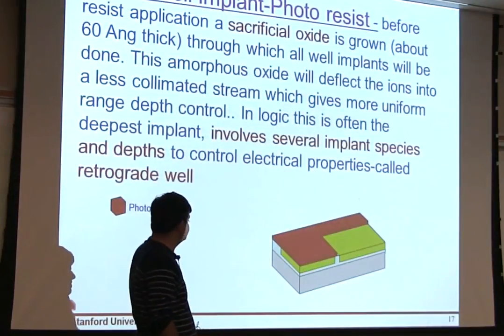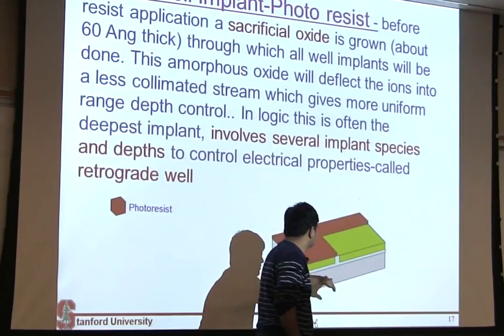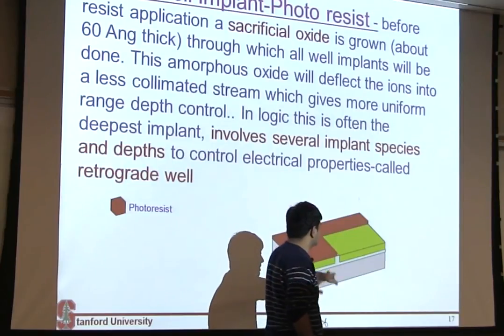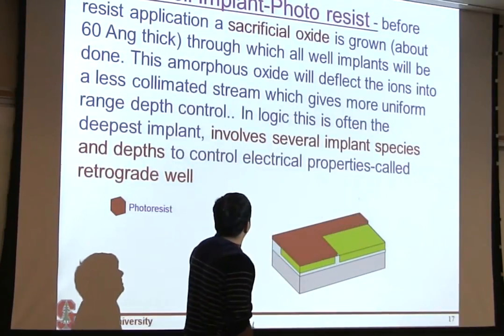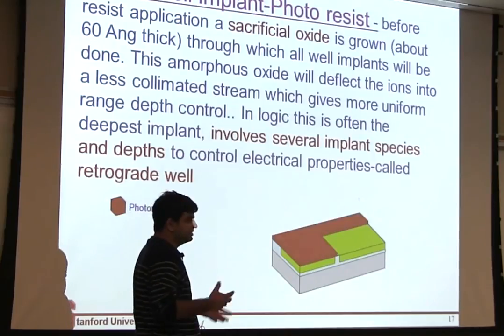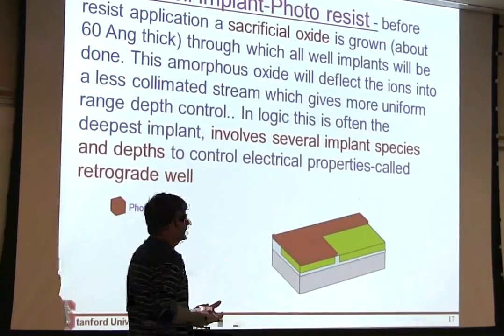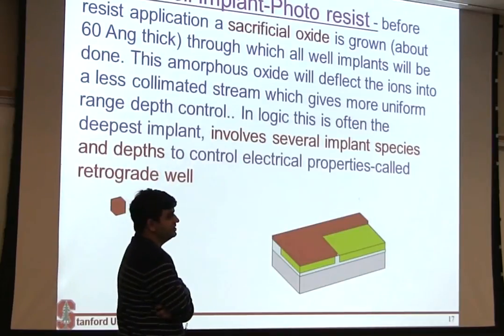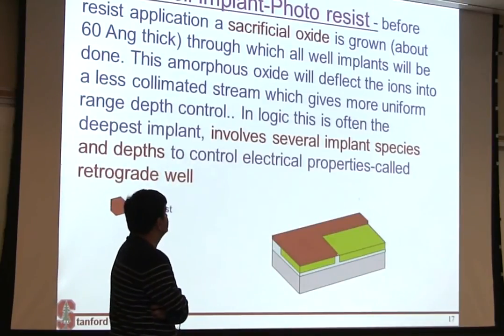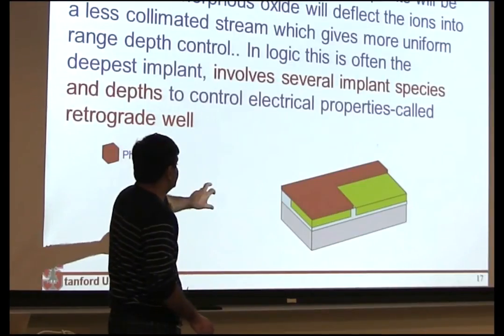So once you have formed these two regions — you have decided I'm going to make my N-type transistors here and my P-type transistors here — the next thing to do is implant them such that they become P-type or N-type. So you do well implants, and these are typically the highest energy implants because you want to implant to a large depth.